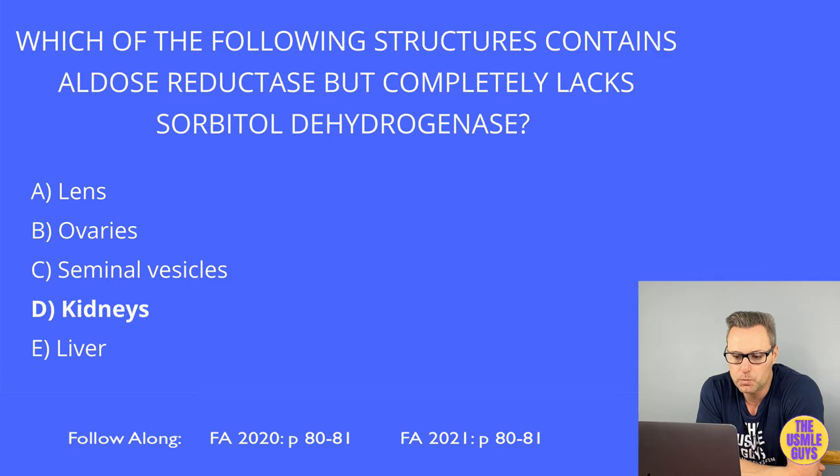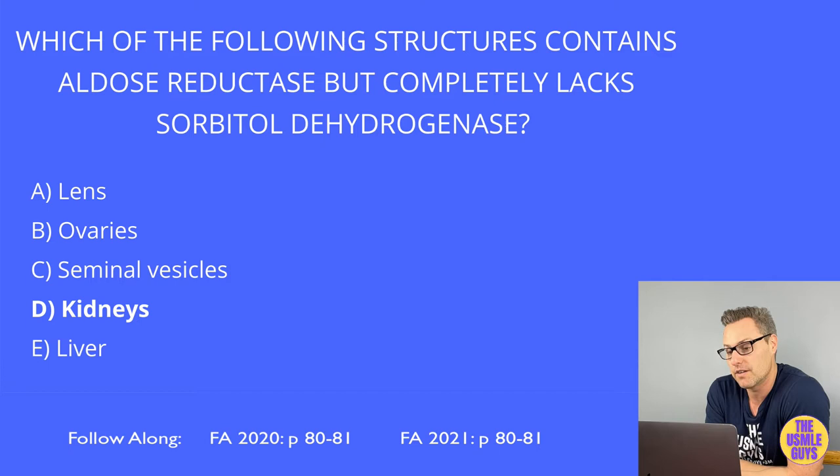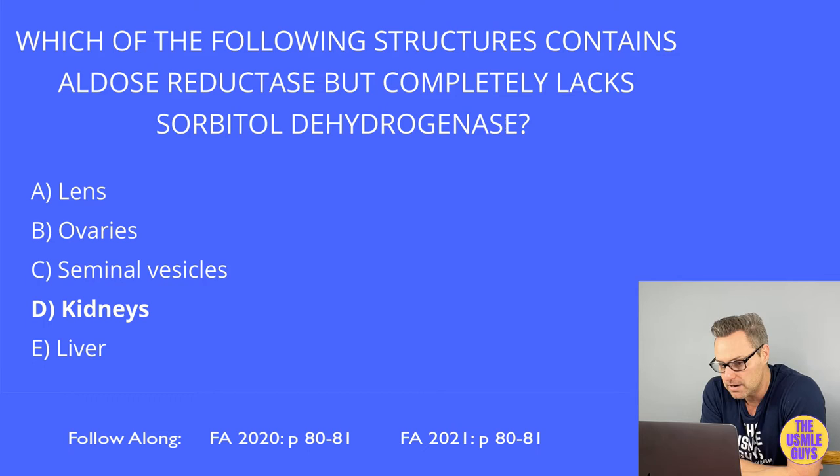Moving on to disorders of galactose metabolism, we have galactokinase deficiency. This is inherited in an AR manner and caused by deficiency of the galactokinase enzyme. As a result, there will be an accumulation of galactitol if the patient eats anything containing galactose. This is relatively benign, but it can result in infantile cataracts, as well as an inability to develop a social smile or track objects.